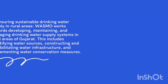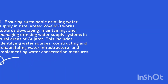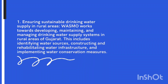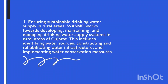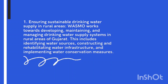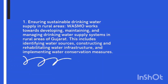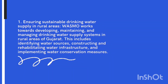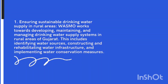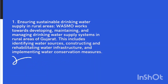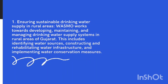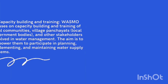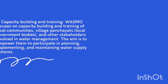The primary objectives of WASMO are: 1. Ensuring Sustainable Drinking Water Supply in Rural Areas. WASMO works towards developing, maintaining, and managing drinking water supply systems in rural areas of Gujarat. This includes identifying water sources, constructing and rehabilitating water infrastructure, and implementing water conservation measures.